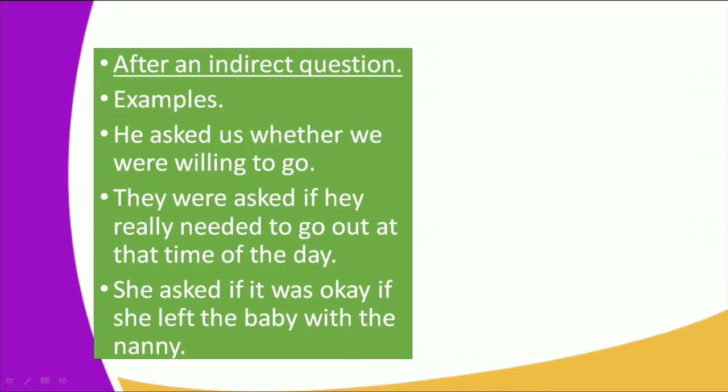Next, we have after an indirect question. That is the other use of the full stop. Example one: He asked us whether we were willing to go. Next, they were asked if they really needed to go out at that time of the day. And the last one: She asked if it was okay if she left the baby with the nanny. Those are three examples of indirect questions and once again being signaled by the period, the full stop.